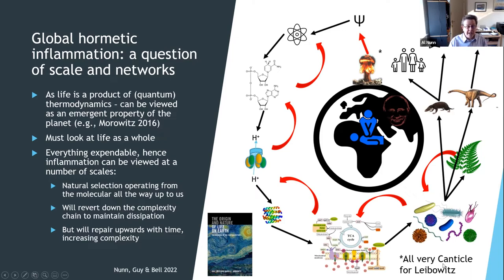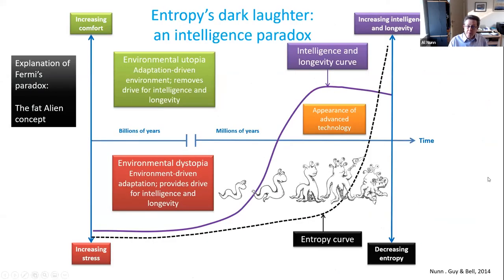One of the things we've always been very interested in as a group is trying to explain why modern lifestyle seems to have resulted in a lot of self-induced disease — things like obesity and diabetes. What we've come to the conclusion of is that this is something which is almost an intelligence paradox. We've used this idea as a kind of parable, applying it to Fermi's paradox.